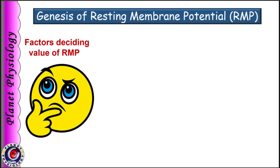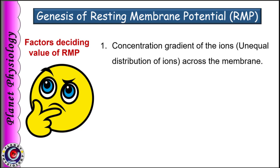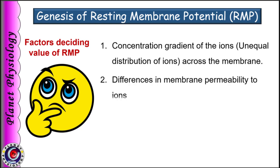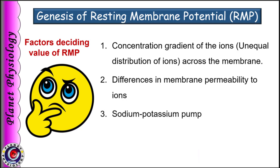What decides this value of resting membrane potential? It depends on the concentration gradient of the ions across the membrane, differences in the membrane permeability to the various ions, and the activity of the sodium-potassium pump. So let us study these factors in detail, starting with concentration gradient.